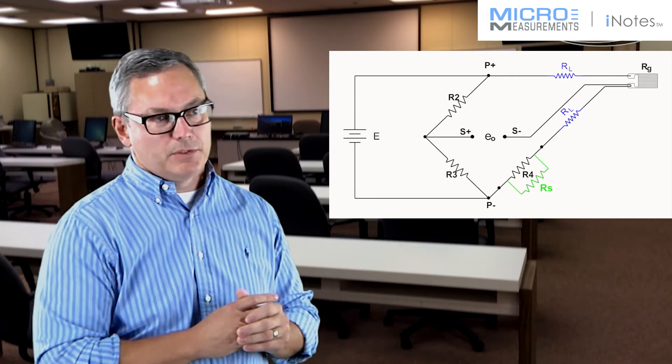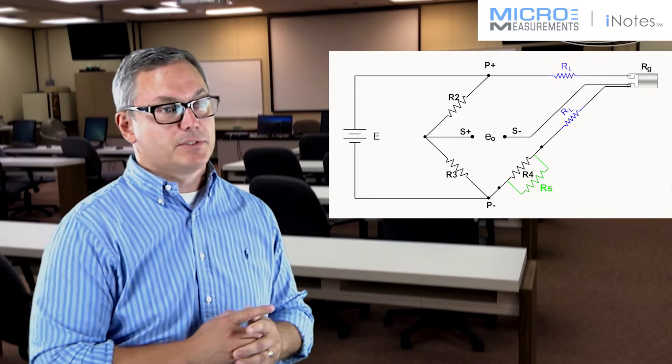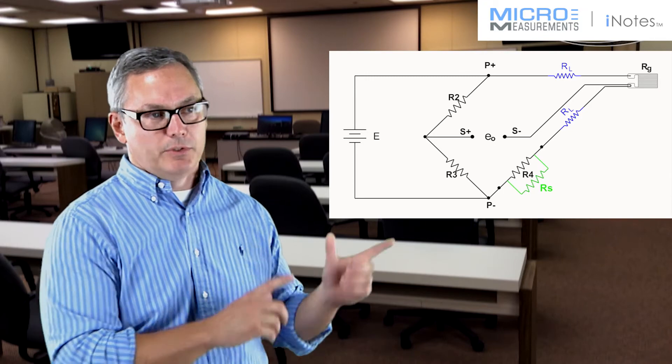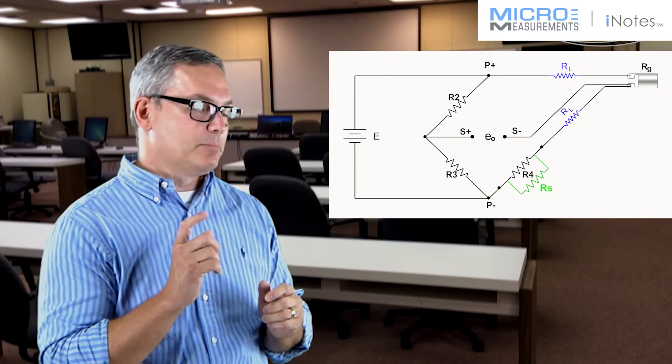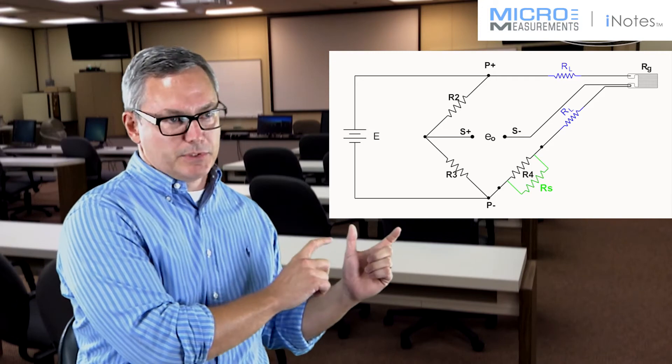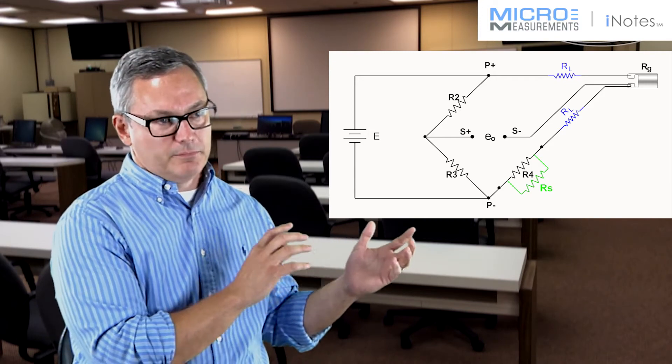One of the advantages to shunt calibrating the dummy resistor is that you can use it to compensate for the lead wires that are connected to your strain gauge. In addition, when you shunt the dummy resistor, you're taking a precise resistor and connecting it across another precision resistor, and that simulates a very precise level of change.